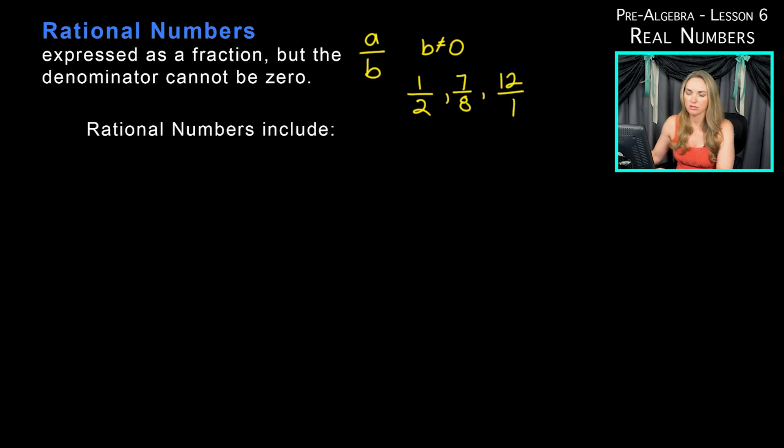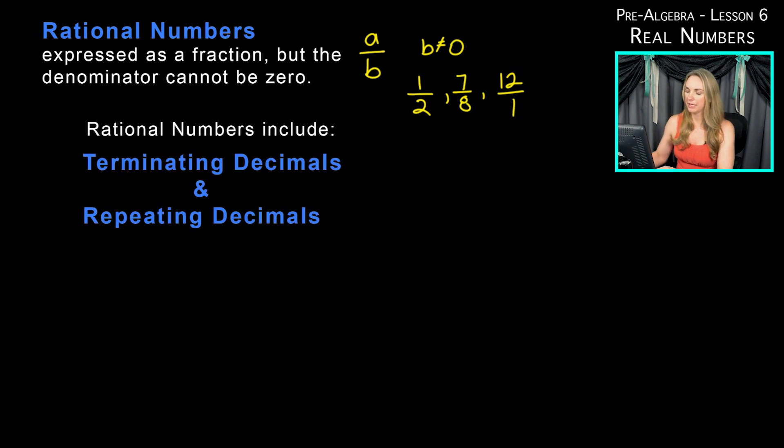Rational numbers also include terminating and repeating decimals. A terminating decimal would be like 1.2—this decimal ends at 2 tenths and does not continue going. Maybe 3.75, which is 3 and 75 hundredths. 6.0 is considered a terminating decimal.